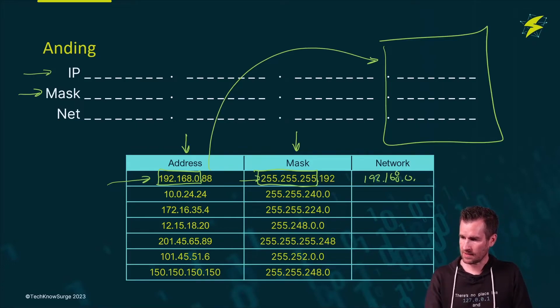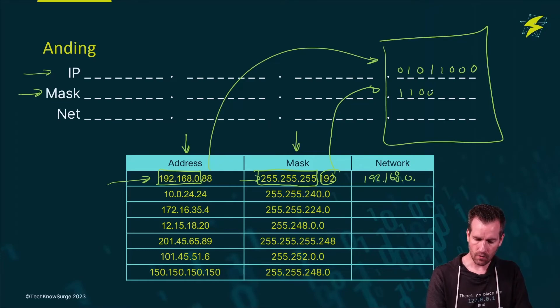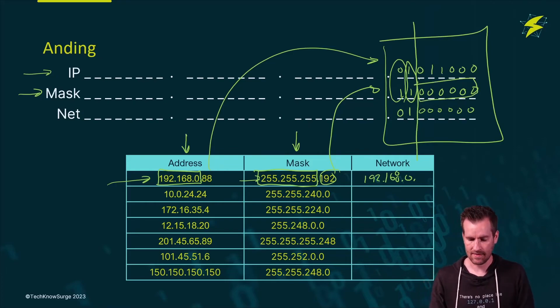So right from the get-go, I already know this is going to be 192.168.0, and now I just need to figure out what the last octet is going to be. I'm only going to fill in the binary numbers for the last octet. So 88 into a binary number is going to be 01011000. Now I need to take the 192 and convert it, which is 128 plus 64, and the rest are 0. Now I can draw my line, do the anding process. This is 01, so that's 0. This is 1 and 1, so that's 1. And the rest are just 0. So the network address is dot 64.